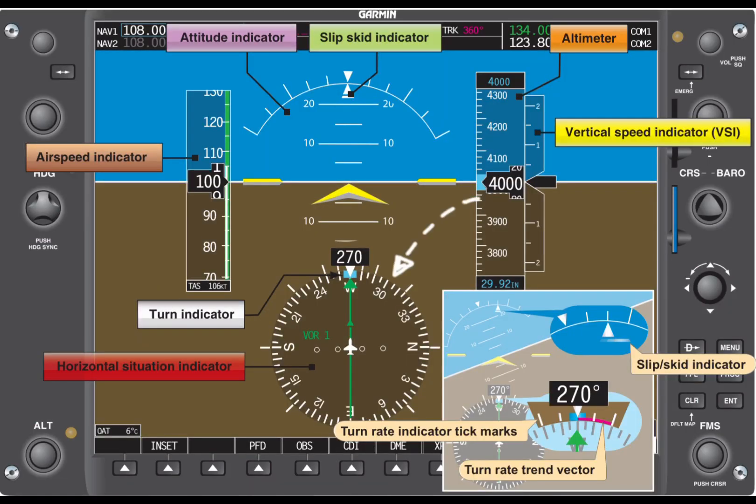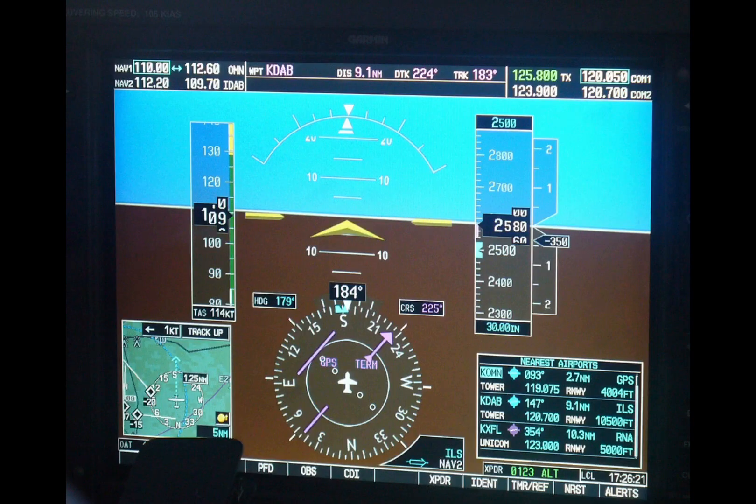Now let's take a look down here at the new heading indicator. Just like the old one, this guy tells us our magnetic heading. But in addition to that, you probably already noticed that it also gives us some navigation information. When it combines this data like this, we call this a horizontal situation indicator. This particular HSI is tuned into a VOR, but a lot of airplanes can display even more than that. This particular airplane has a GPS tied to it.